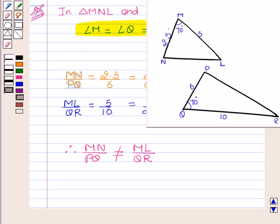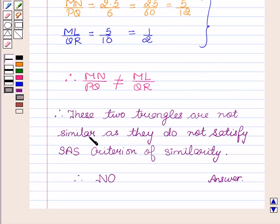From this we conclude that the two triangles are not similar as they do not satisfy the SAS criterion of similarity.